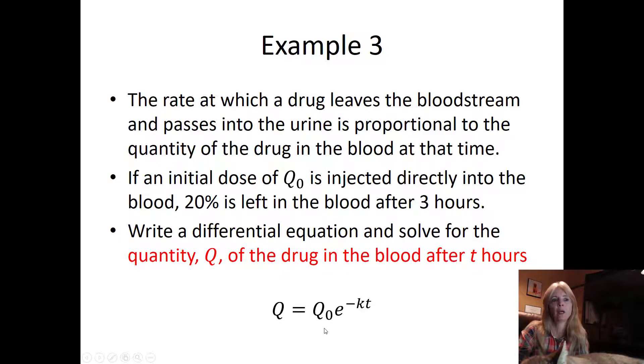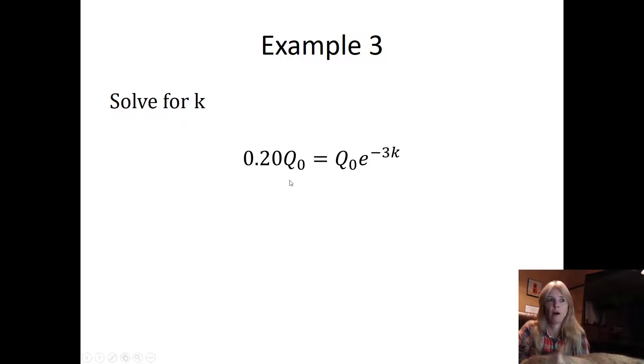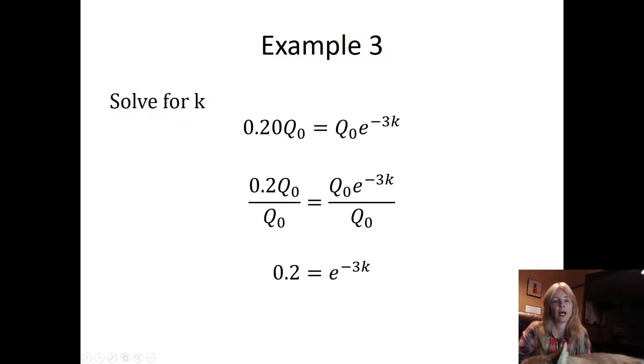My Q_0 is going to be my initial. If an initial dose is injected directly into the blood, 20% of that initial is left after three hours. I switch the order; we typically like the number out front. From here I can solve for k because I can divide off that initial value, Q_0. If I divide Q_0 on both sides, I am left with just 0.2 equals e^(-3k). We've done many of these: how do you solve this for k? Take ln of both sides.